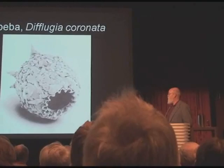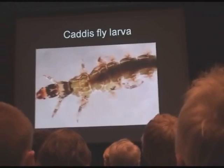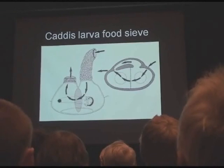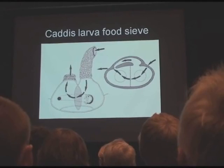Now let's look at another sandcastle that's made by this creature, caddisfly larva. There's its sandcastle — it's a food sieve which it builds in the moving water in a stream and uses to catch food.